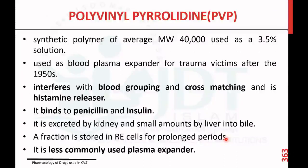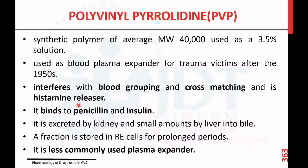Polyvinyl pyrrolidone, or PVP, is a synthetic polymer with an average molecular weight of 40,000, used as a 3.5% solution. It was used as a plasma expander for trauma victims after 1950 but is currently not used because it interferes with blood grouping and cross matching, is a histamine releaser causing allergic reactions, and binds with penicillin and insulin, decreasing their efficacy. It is excreted by the kidney and a small amount by the liver, with a fraction stored in reticuloendothelial cells for a prolonged period.